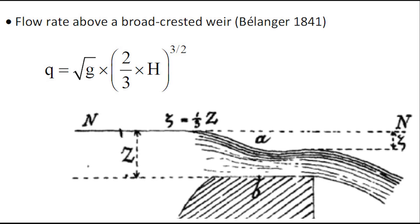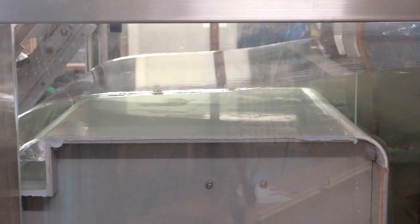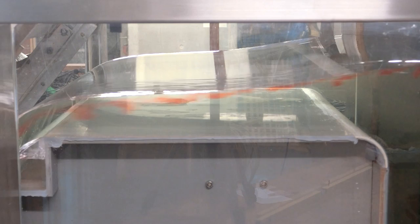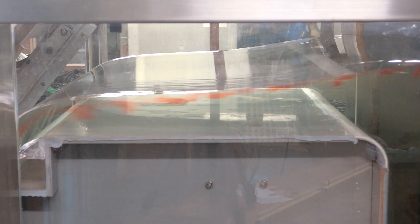The flow rate above a broad-crested weir is also among his contributions. This movie shows an overflow of a broad-crested weir at the University of Princeton, flowing in both directions from right to left. For that particular structure, we performed detailed numerical simulations, which match the longer result of the broad-crested weir within 3%.